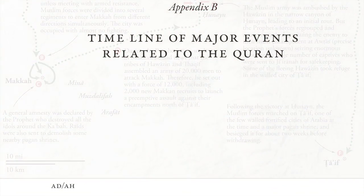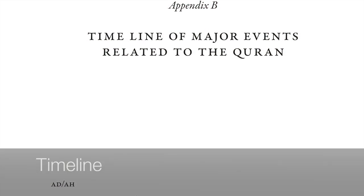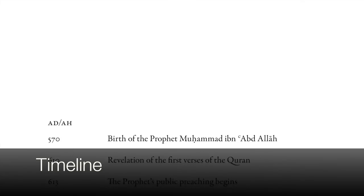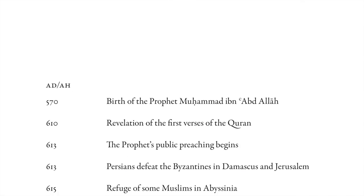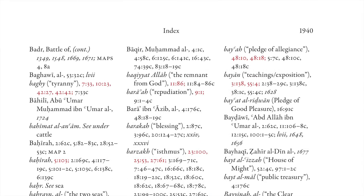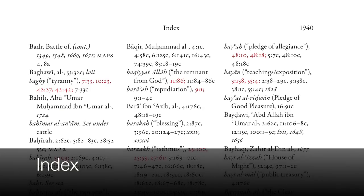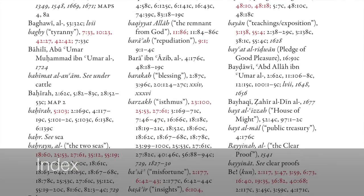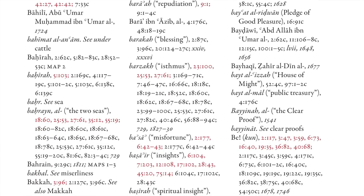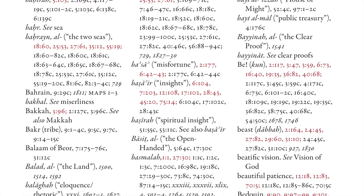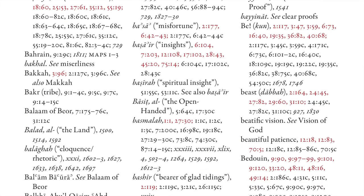A timeline provides important dates related to the Qur'an and the life of the Prophet. Finally, a comprehensive general index is there to help the reader find items in the introductions, the translation and commentary, the essays, and the maps.